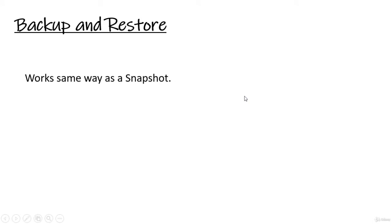The next method is called Backup and Restore. It works the same way as a snapshot. The only difference is it does not include the operating system, which makes the process way lighter, and you can perform it during production hours. It also does not stop any Checkpoint processes and daemons. It creates a compressed TGZ file that contains Checkpoint configuration, including networking, routing table, and interface configuration.